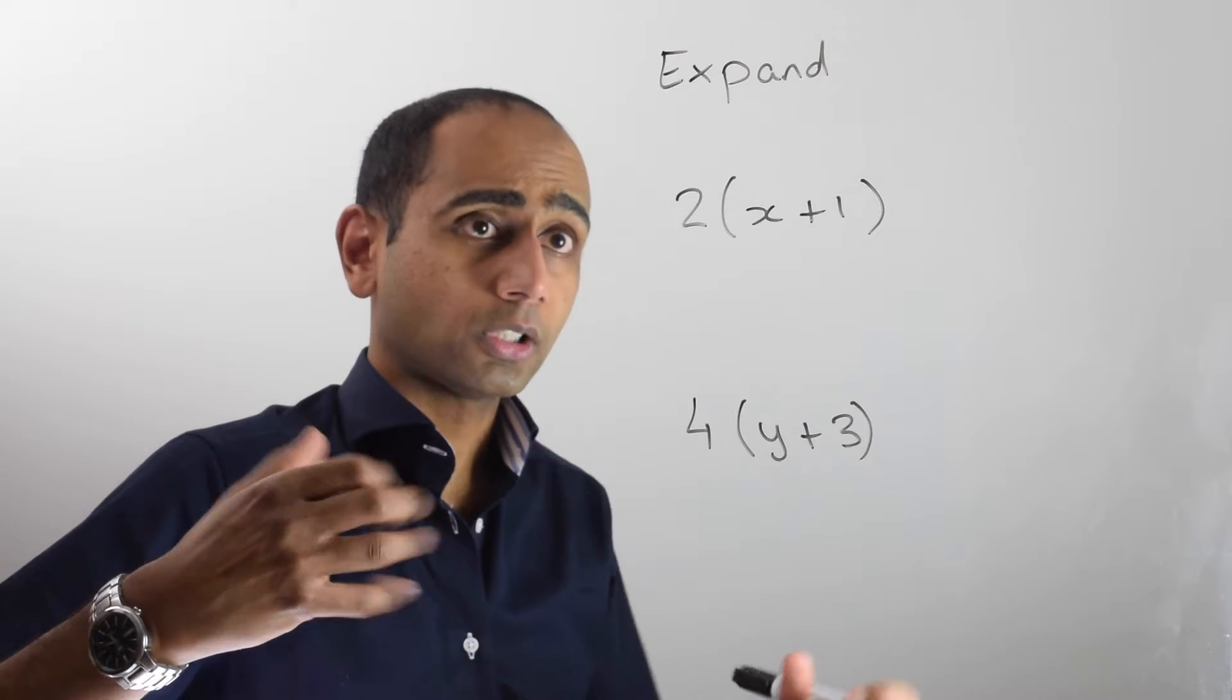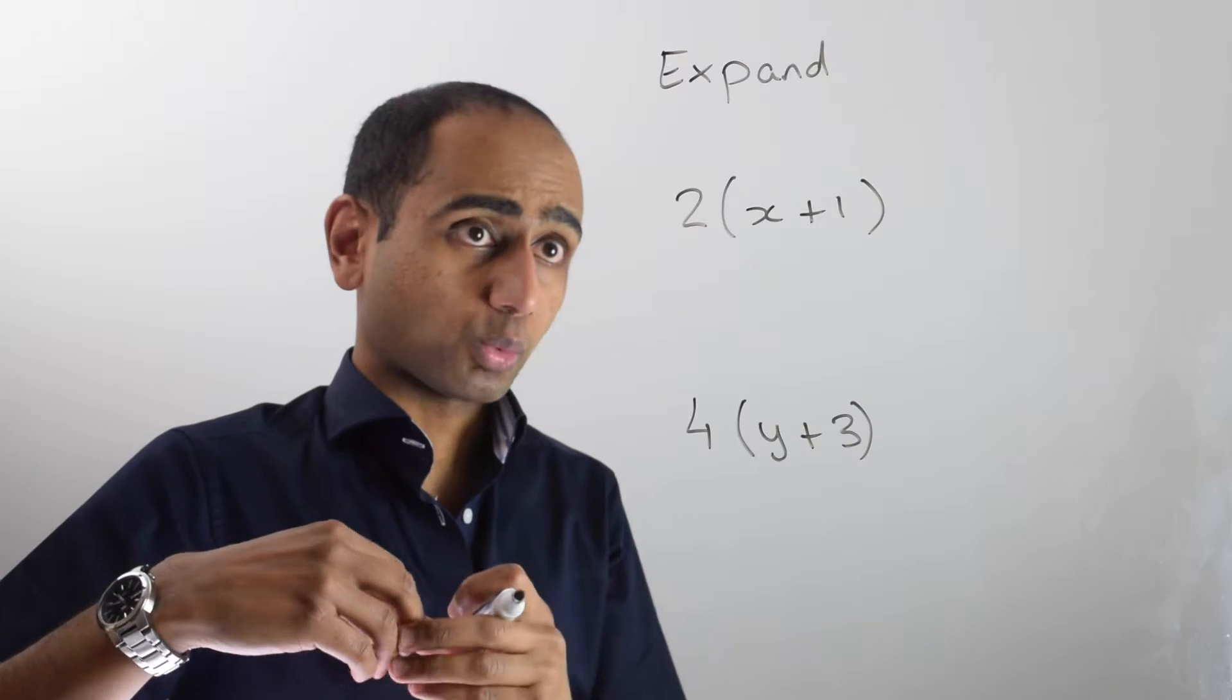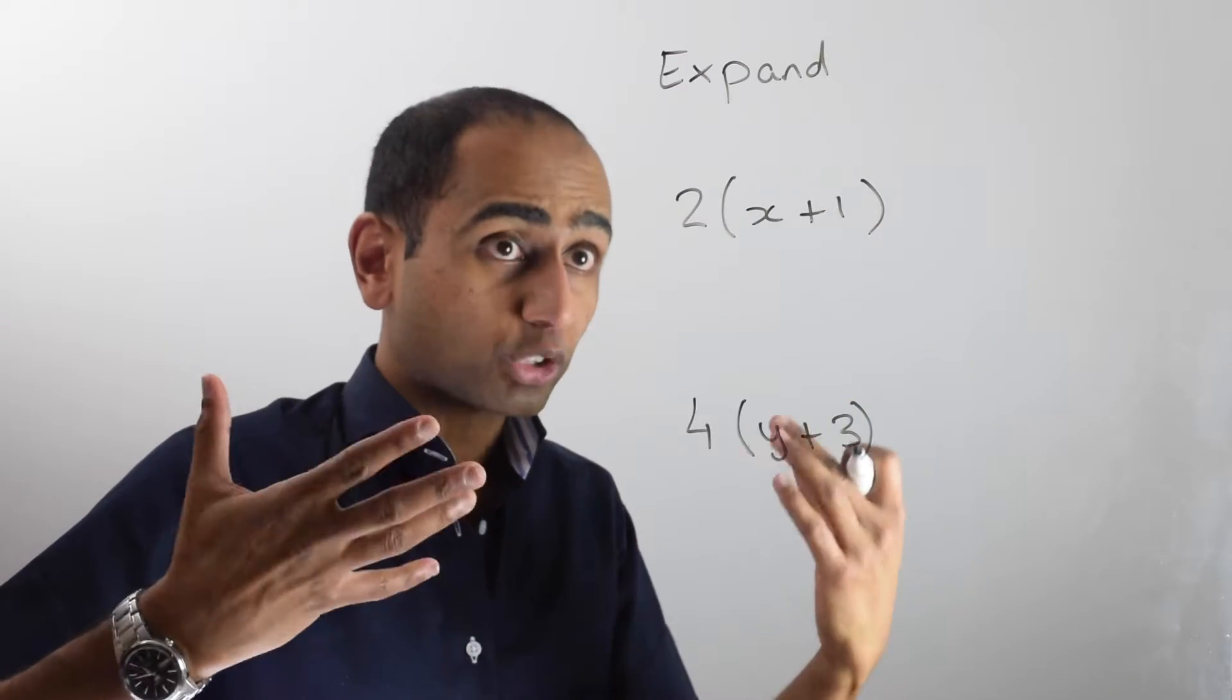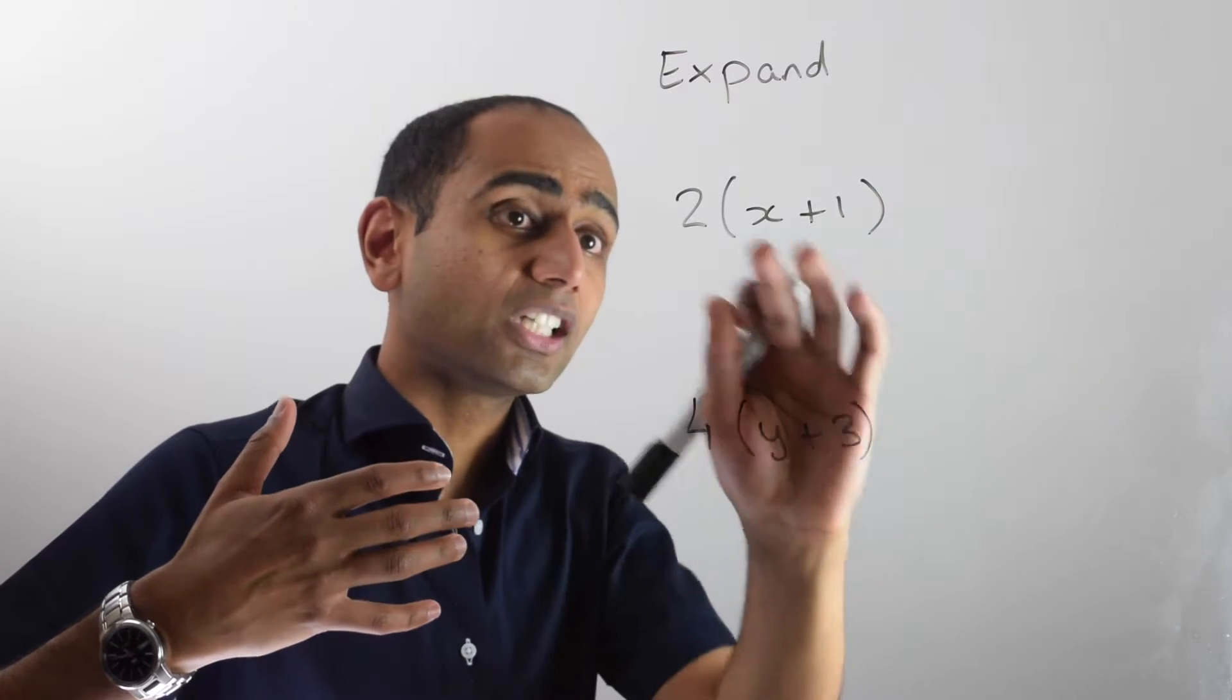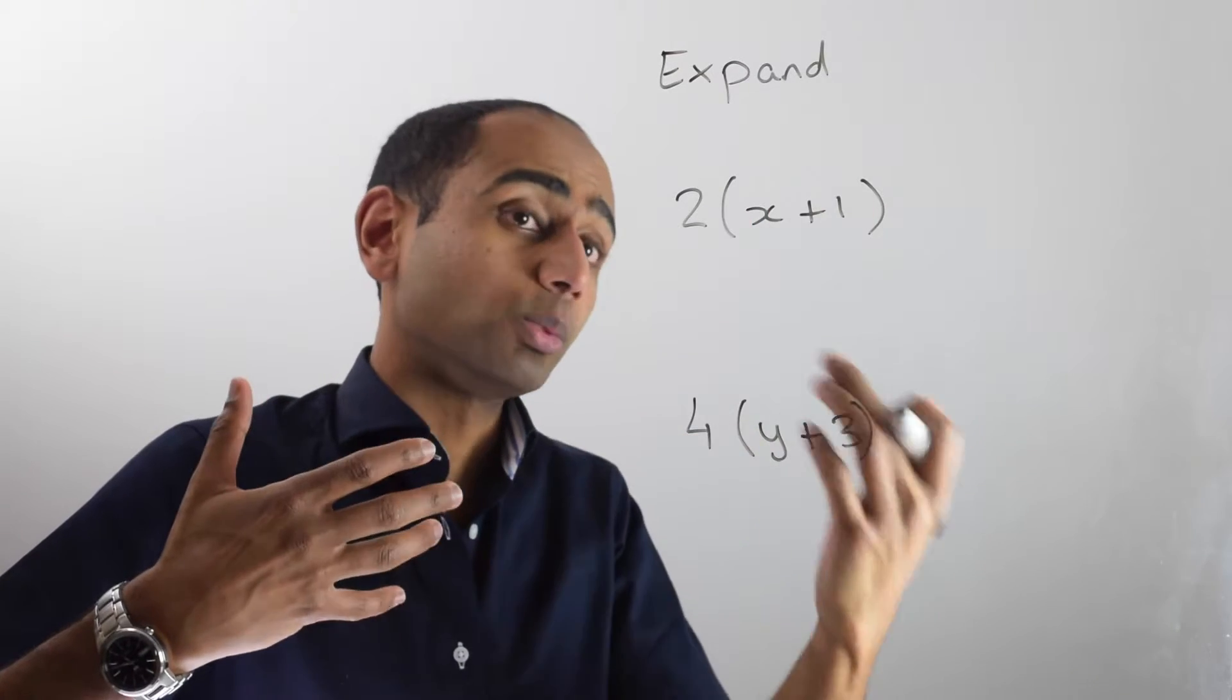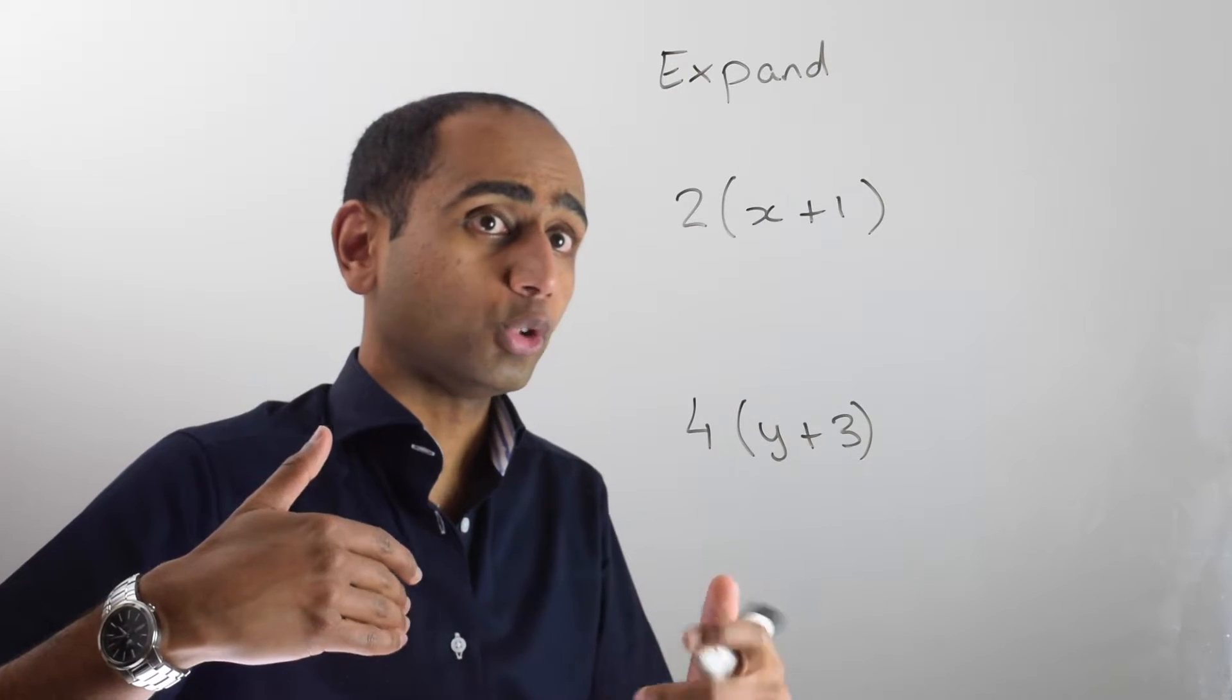Here are the first two examples. In the first one I want to multiply 2 by (x + 1). Now if we try to use BIDMAS we would have to add up x and 1, but we can't simplify this expression anymore because we don't know what x is.